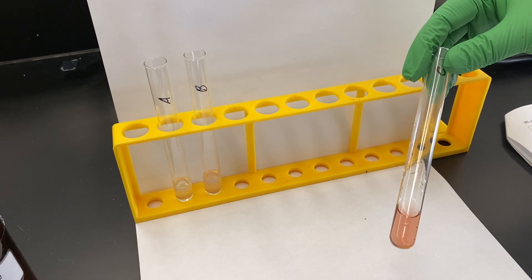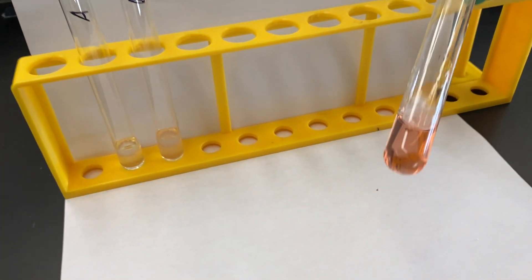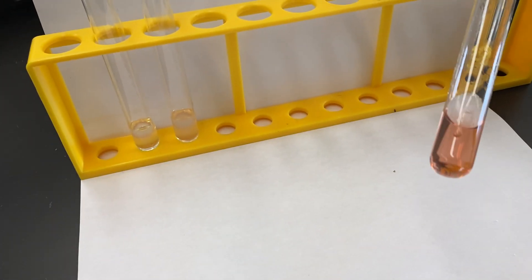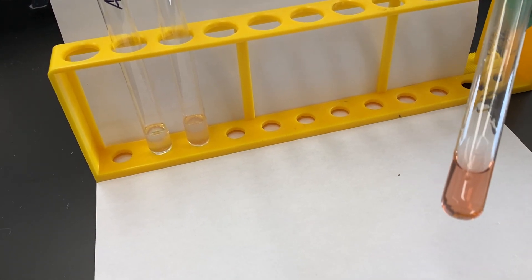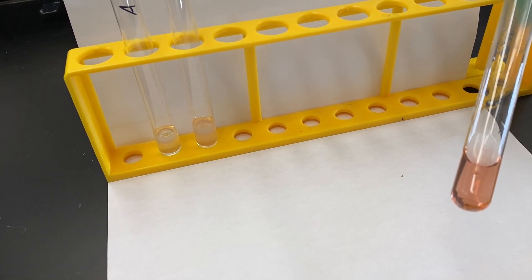We'll look at all four test tubes in just a second. This is pH 7 with distilled water. Throw it on your data sheet.